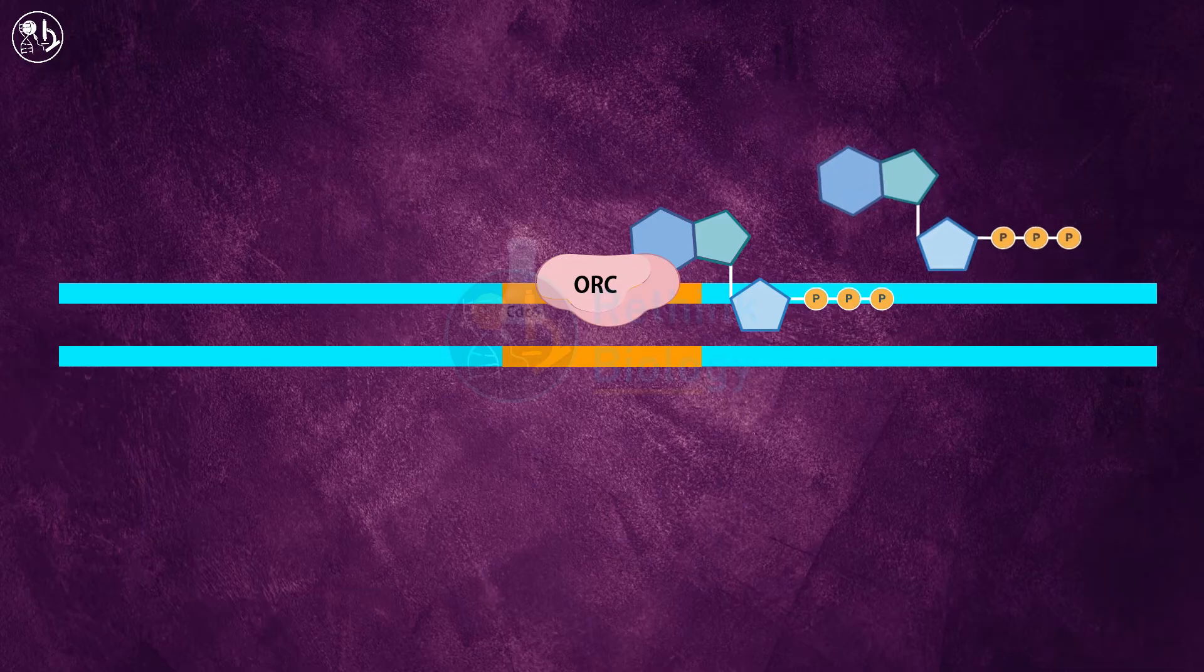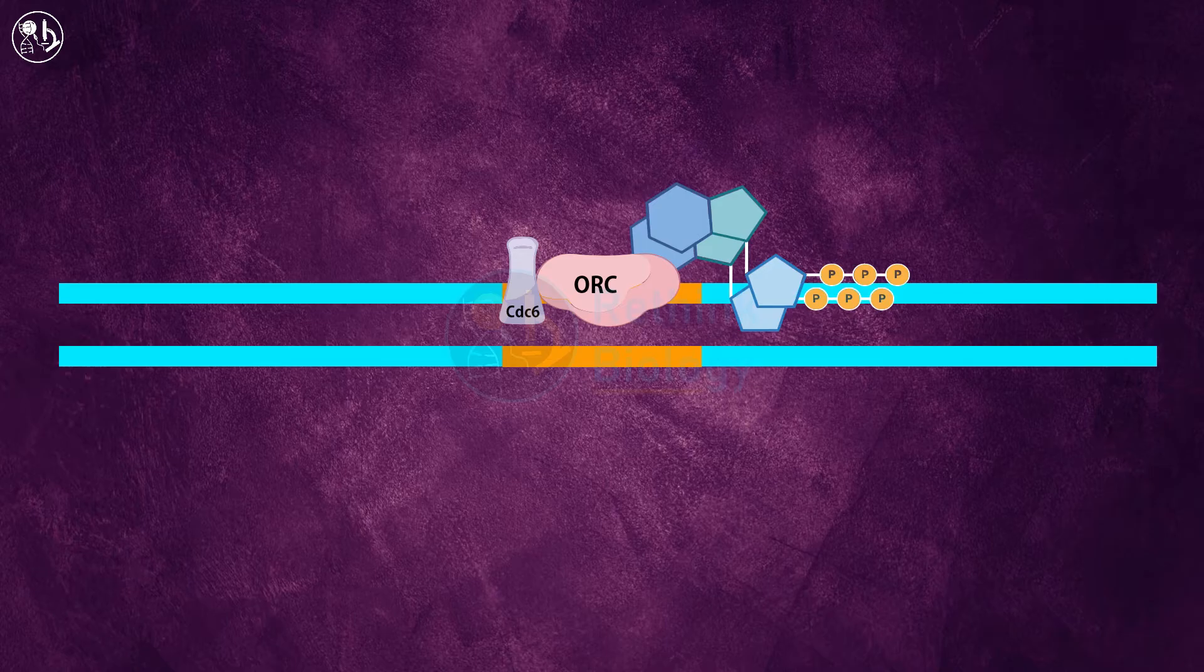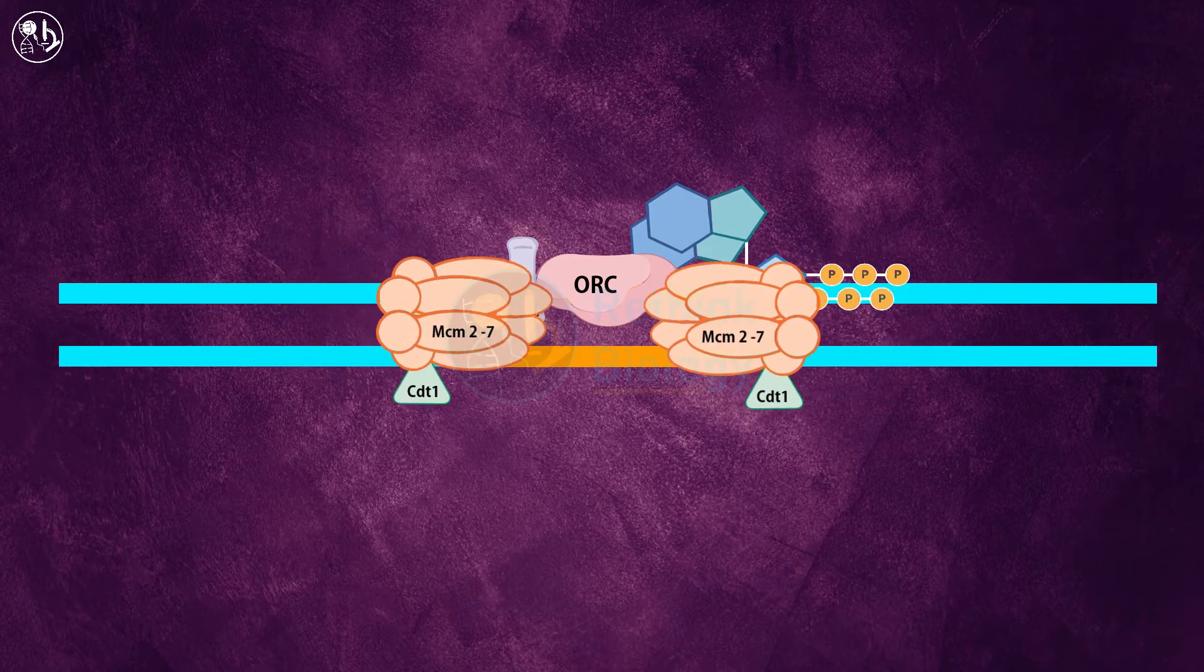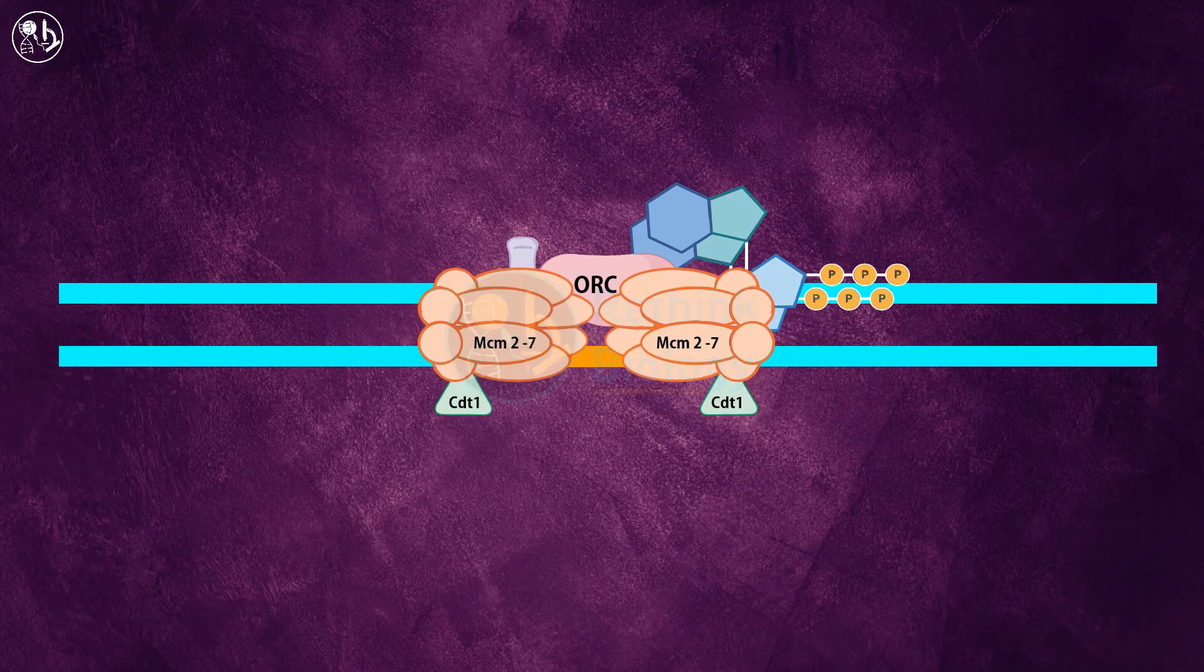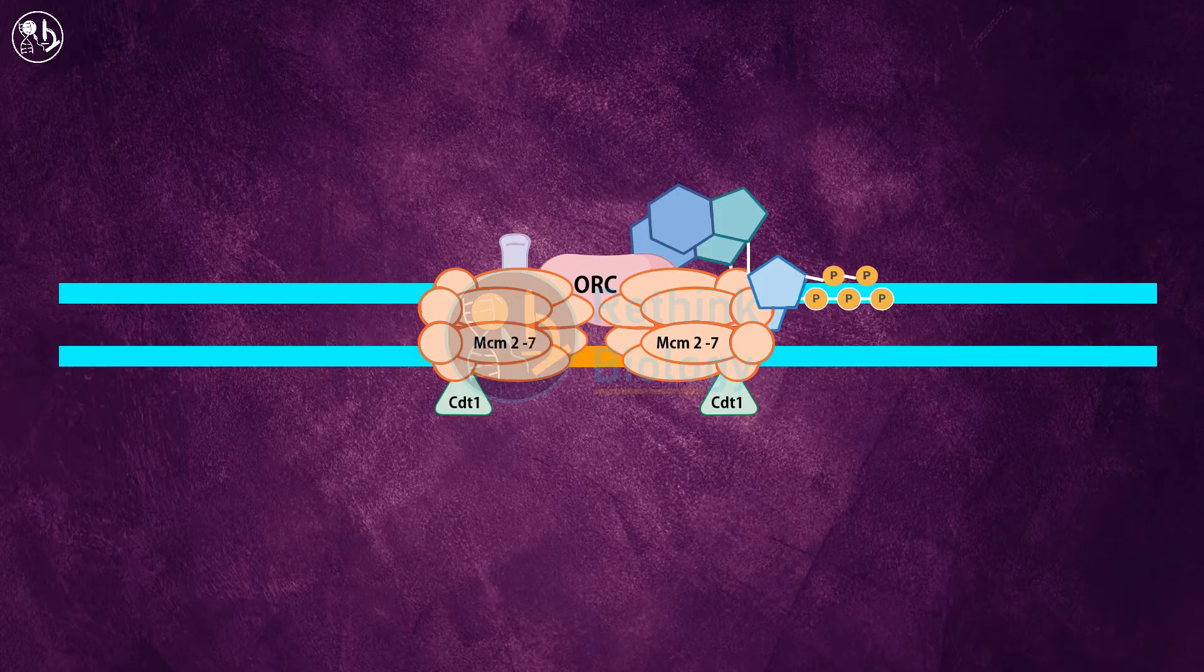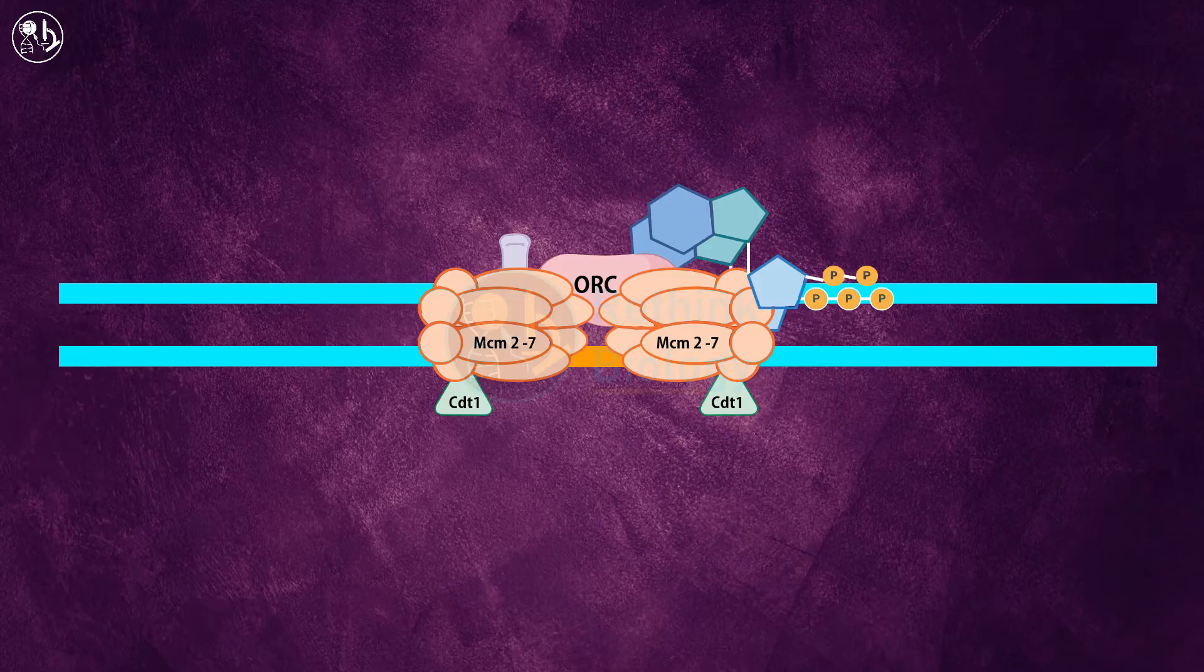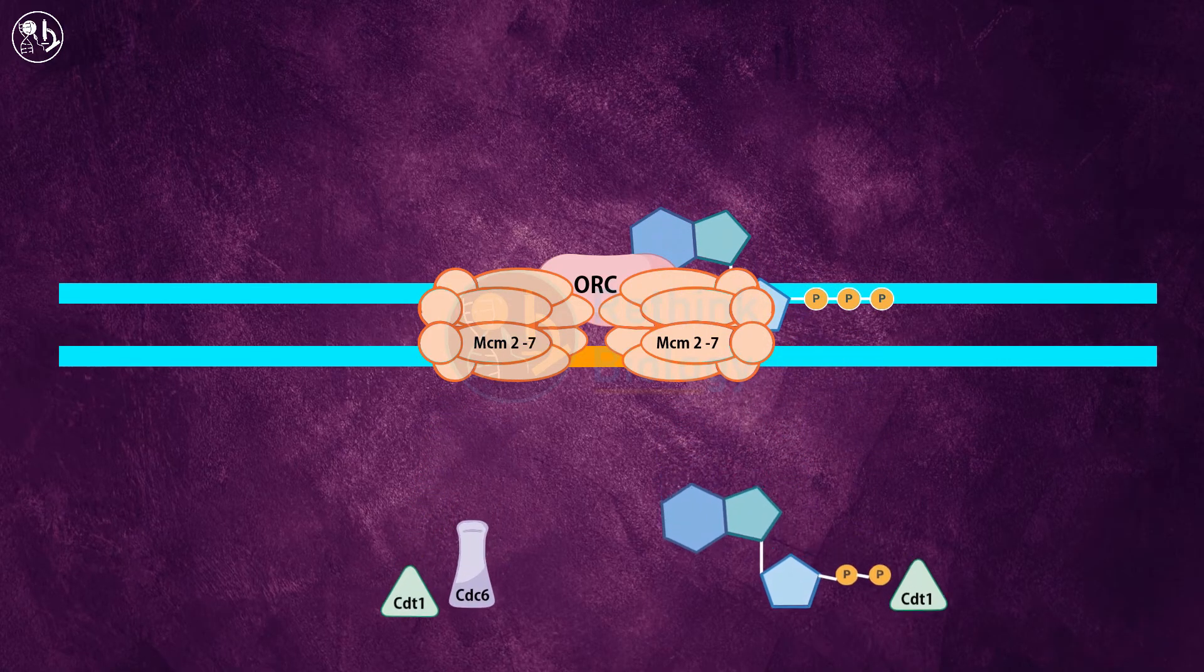This ORC recruits ATP-bound helicase loading protein CDC6. Next, two copies of hexamer mini chromosome maintenance protein complex or MCM2-7 complex attach alongside another helicase loading protein CDT1. This makes the whole complex unstable and triggers ATP hydrolysis by CDC6, which results in the MCM complex encircling the double-stranded DNA and the release of CDC6 and CDT1 from the origin.